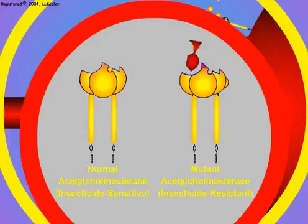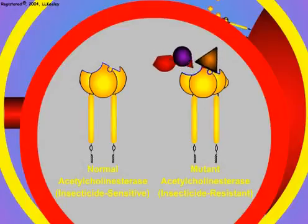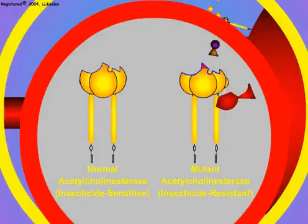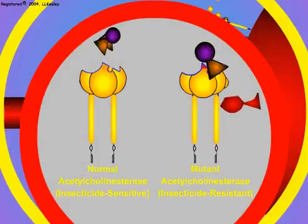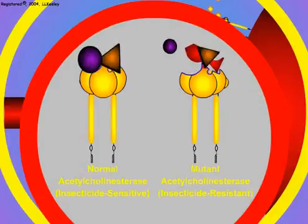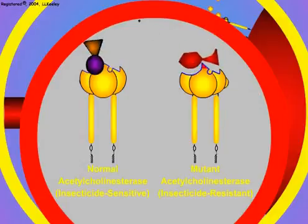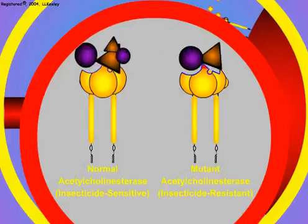The mutation prevents the organophosphate from binding to the active site of the enzyme. However, the enzyme continues to degrade acetylcholine. Although the mutated enzyme is not as efficient at degrading acetylcholine as the normal enzyme, it is sufficiently active to allow nearly normal nervous activity in resistant individuals.